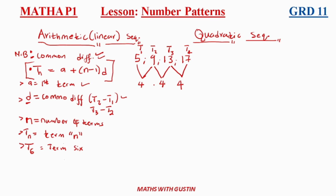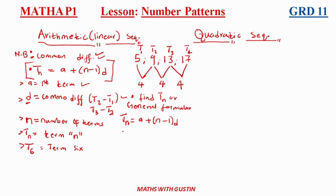If they ask: find Tn or find the general formula of this pattern, we use our formula: Tn = a + (n − 1)d. Here a = 5 and d = 4. Substituting: Tn = 5 + (n − 1) × 4. Expanding the bracket: 4 times n gives 4n, and 4 times negative 1 gives negative 4.